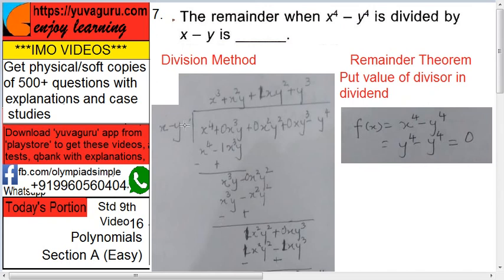Multiply y with x square y, you get x square y square. Then x square y square, bring this minus 0 x y cube. Here you get x square y square. Multiply y with x y square, you get x y cube.